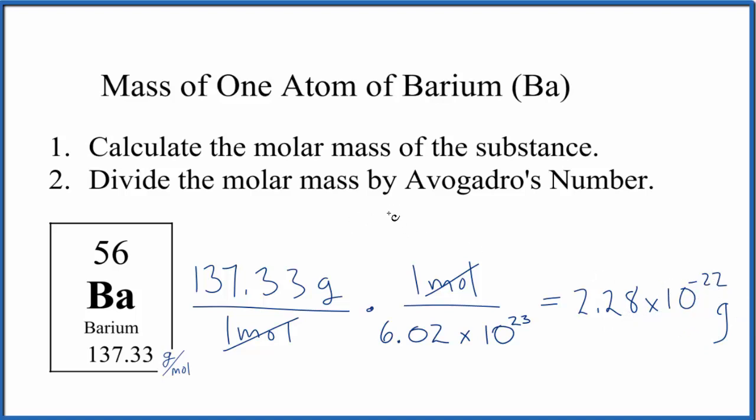Finally, if you're given an isotope of barium, like barium 138, instead of having the 137 here, you would put 138 in and do the calculation. So that would give you the mass of one atom of the isotope barium 138.